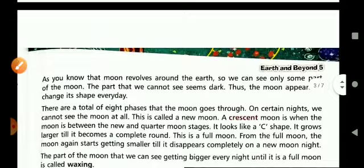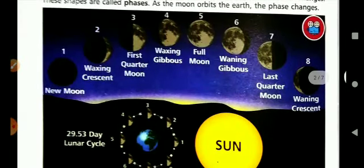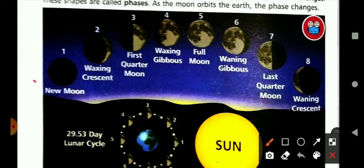The phases of the moon are given here, children, as you can see. The new moon, the first stage, then waxing crescent, first quarter, waxing gibbous, and it is a full moon.